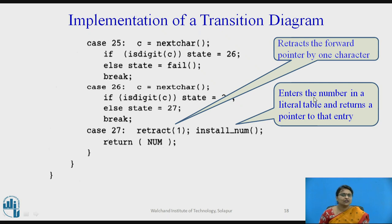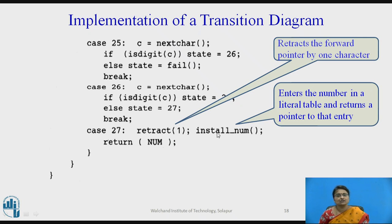The retract function retracts the forward pointer by one character so that the next lexeme is read again from the beginning — it does not ignore the extra character that was read. After retracting, installNum is called, which makes the number entry in the literal table. This completes the implementation of the transition diagram.